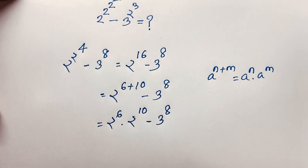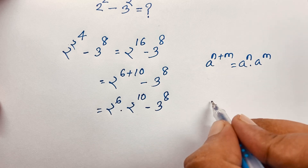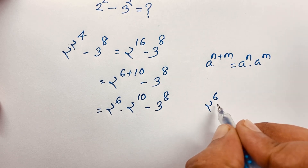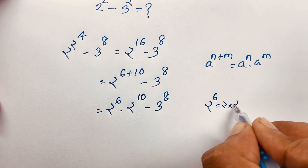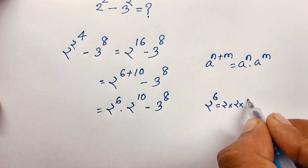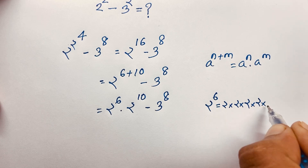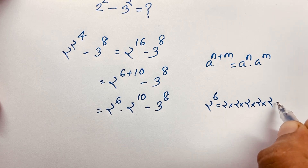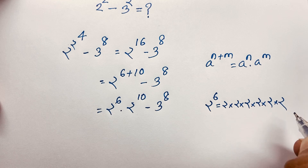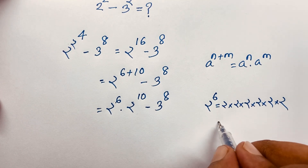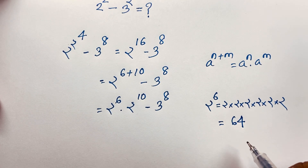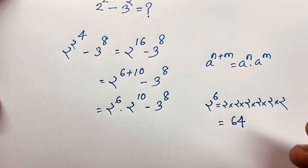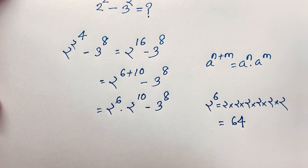Now, 2 to the power 6 is equal to what? So 2 to the power 6 is 2 times 2 times 2 times 2 times 2 times 2, which equals 64. We know that 2 to the power 5 is 32, and 32 times 2 is 64. But 2 to the power 10 is equal to what?